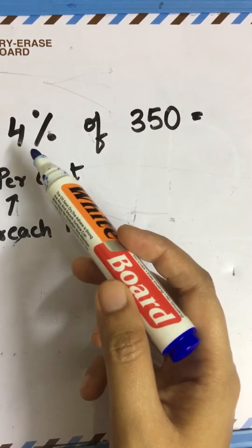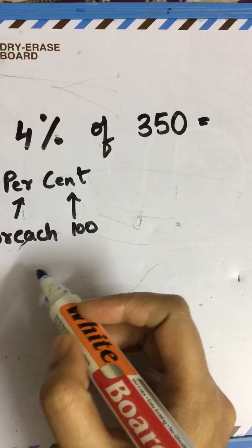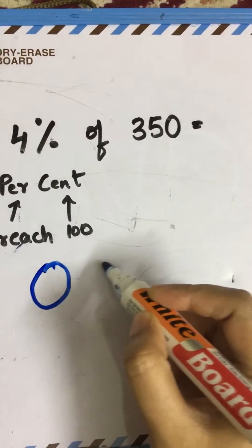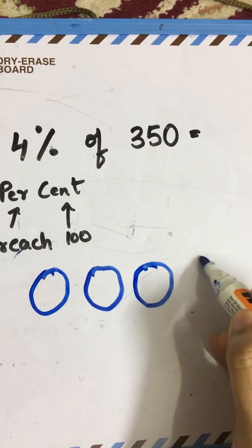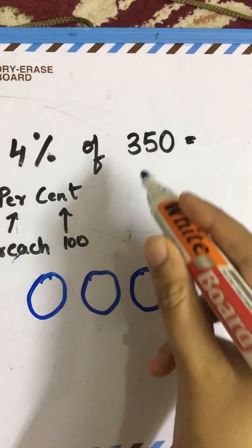Let's draw how many hundreds do we have. 100, 200, 300, and one more - there's 350.